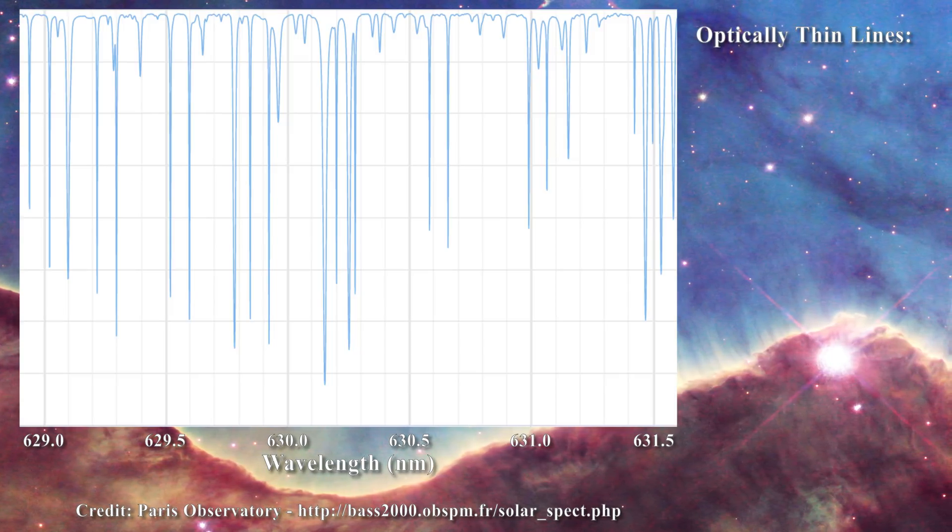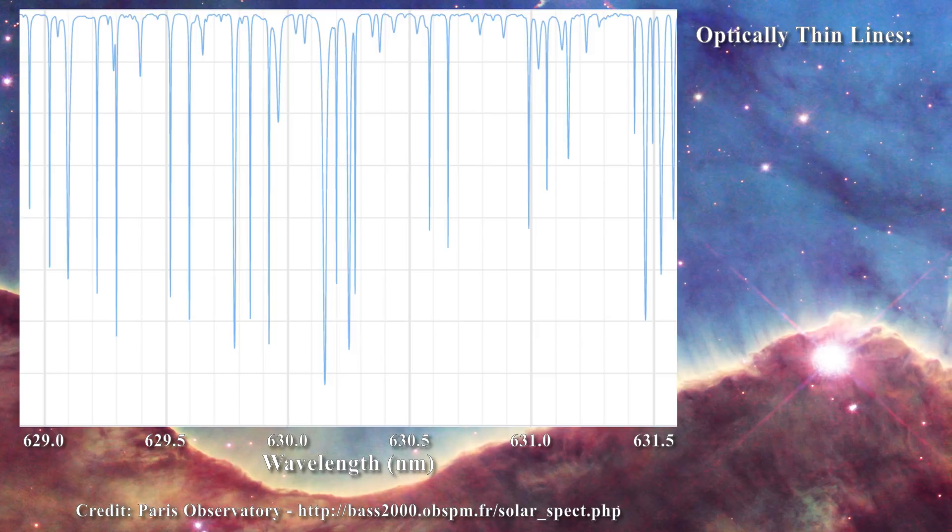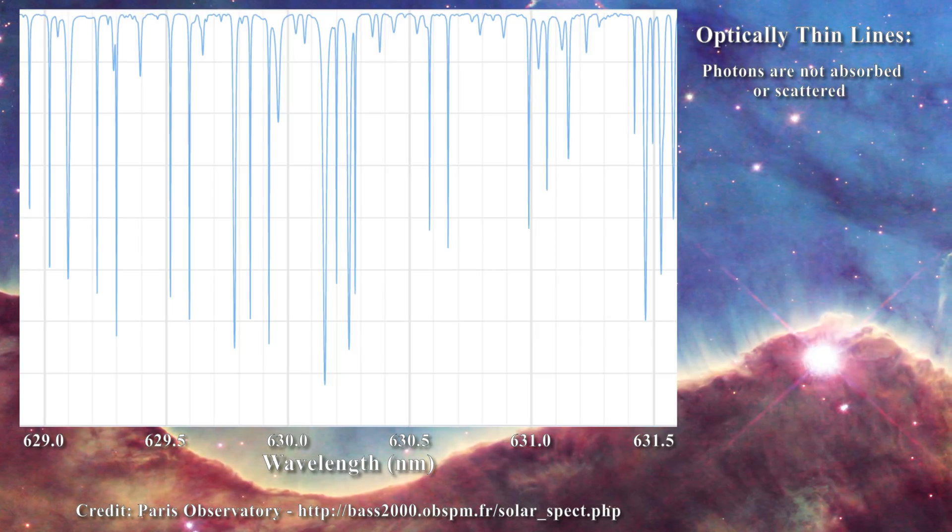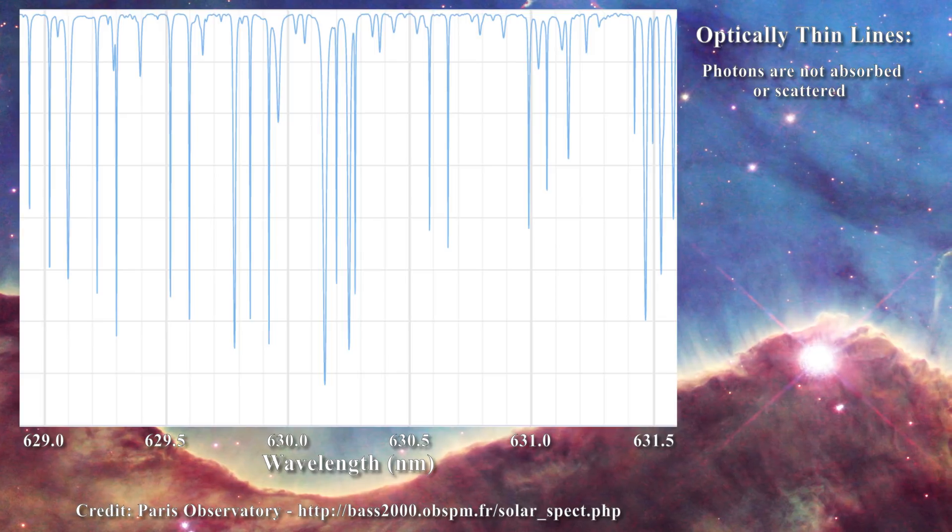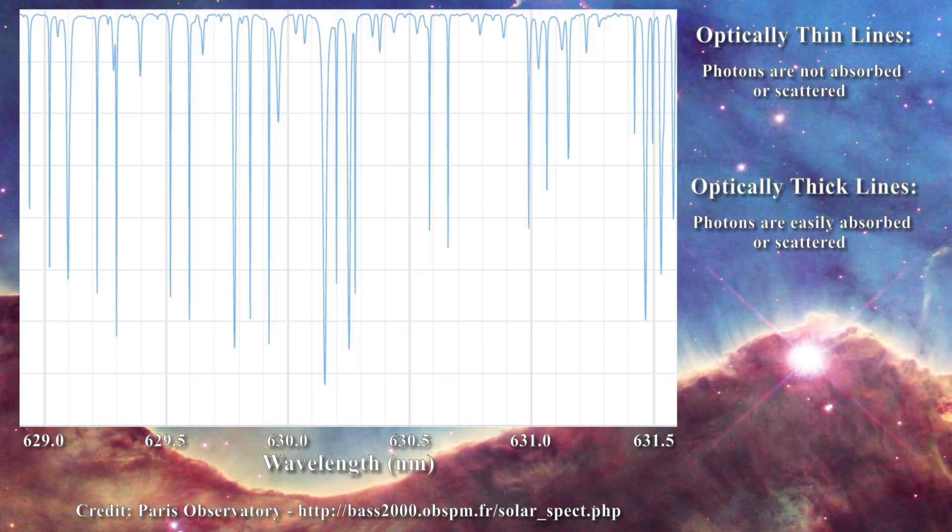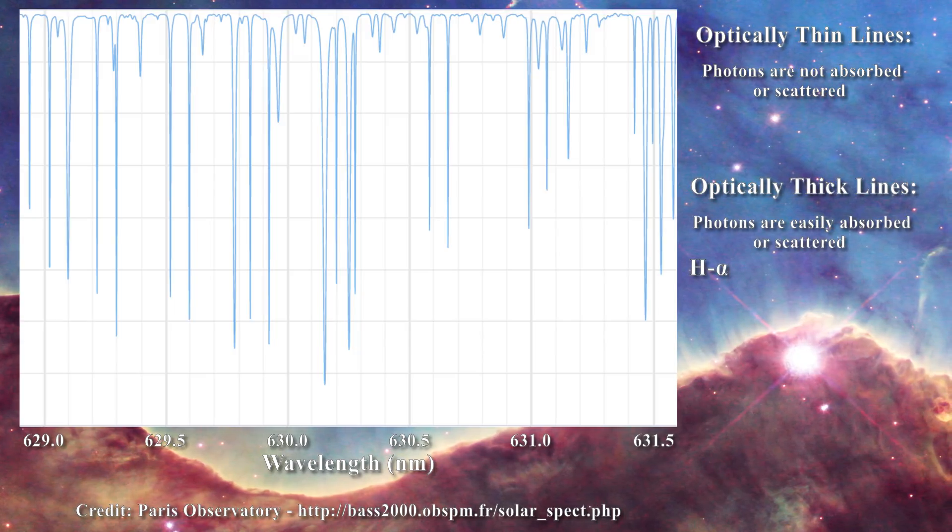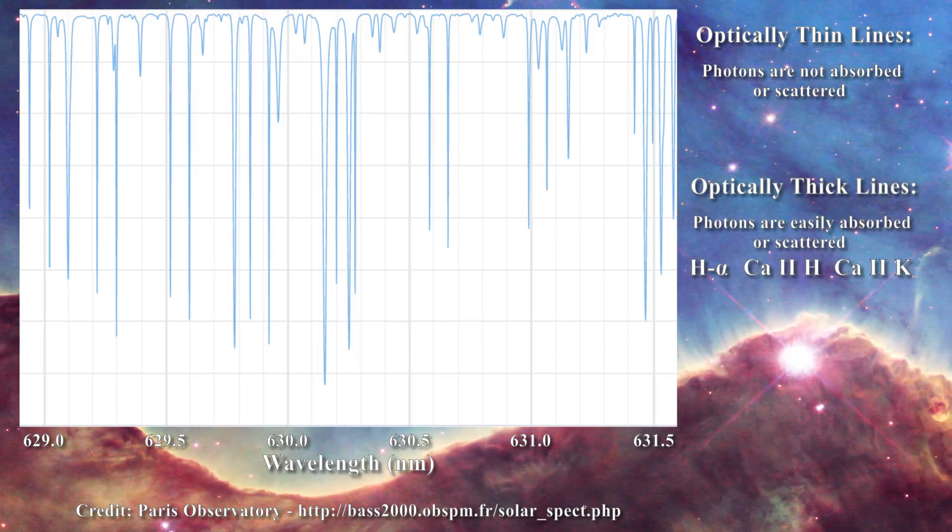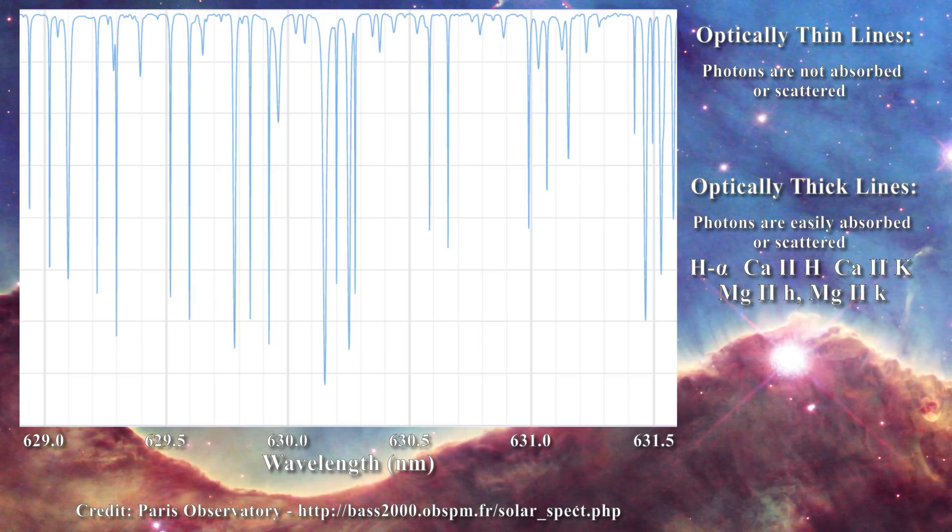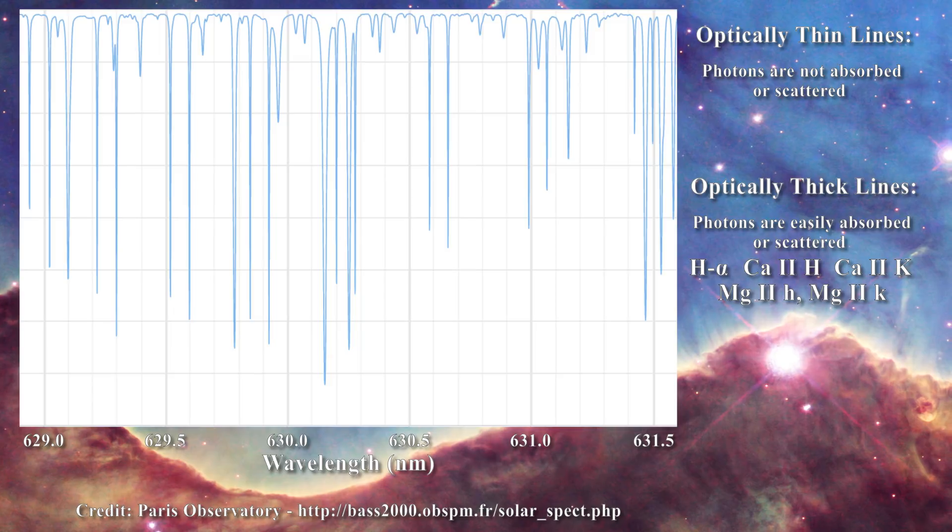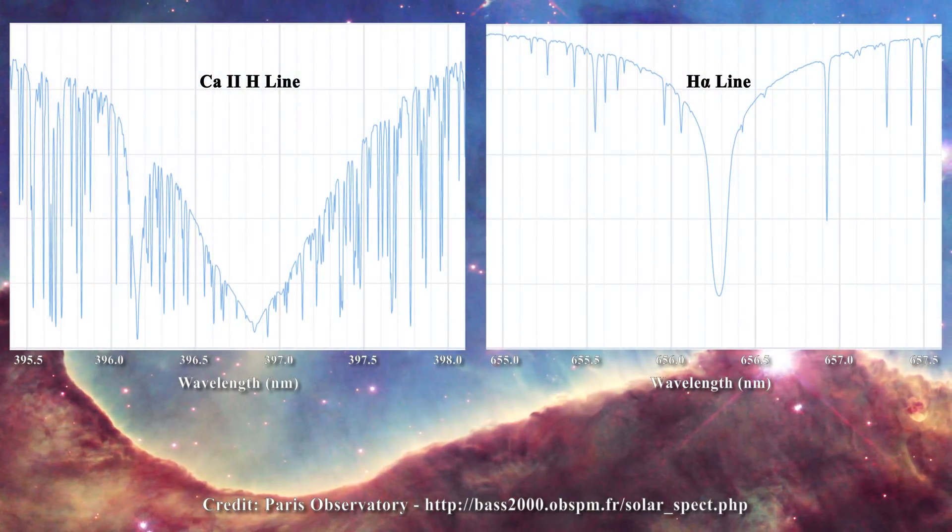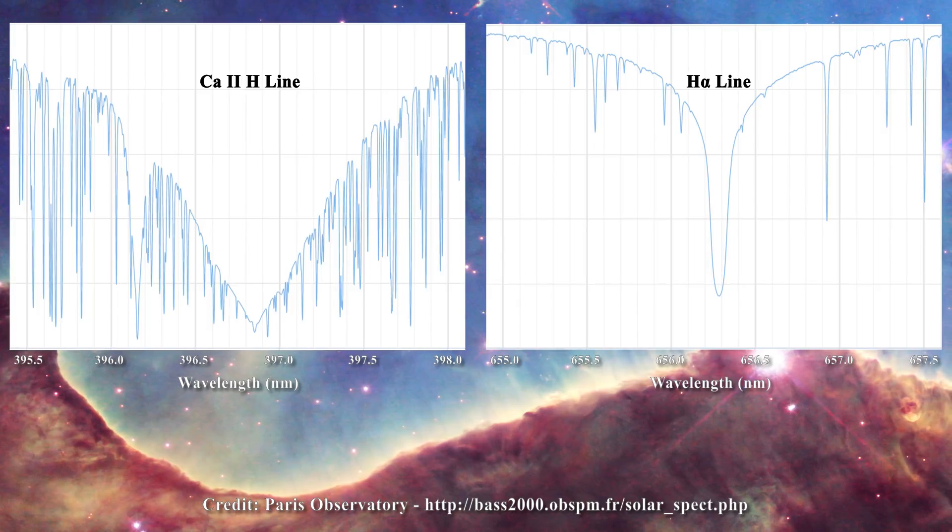When lines are optically thin, the photons involved in line creation can pass through the solar atmosphere essentially without being absorbed or scattered. Conversely, if the photons are easily absorbed or scattered, then the line is considered to be optically thick. Optically thick lines include the hydrogen alpha, calcium 2 H and K lines, and the magnesium 2 H and K lines. Each of these lines are very broad in the Fraunhofer and chromospheric spectra. I present examples of the calcium H line and the hydrogen alpha line from the Paris Observatory website.